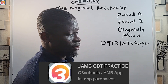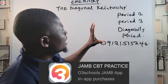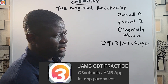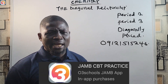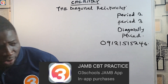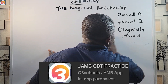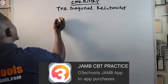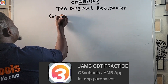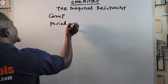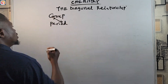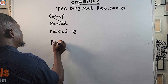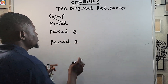So, talking about diagonal relationship — we said it is a term used to describe similar properties between Period Two elements and Period Three elements diagonally placed. I'm going to use a table to show you the periodic table and show you where diagonal relationships happen. So we have groups going across and periods going down.